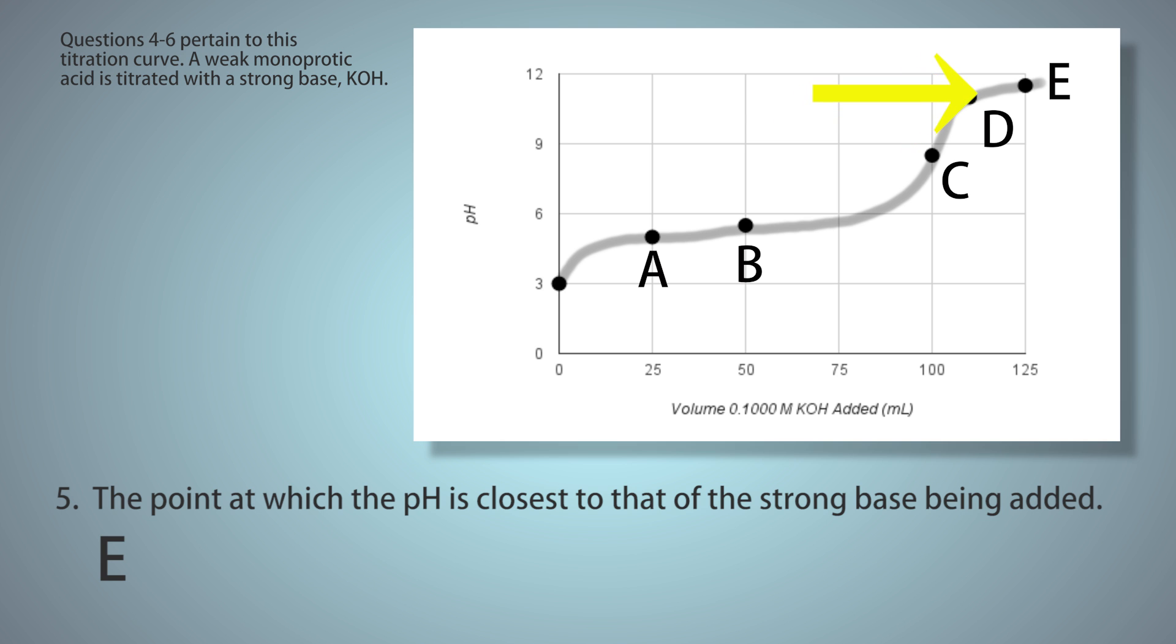You can see the pH is increasing and increasing until it starts to level off. It's still changing at point D, so D is not right. That's not quite at the pH of the titrant. But by point E, the curve is changing less and less, and it's closer to a plateau. So E is the best answer.